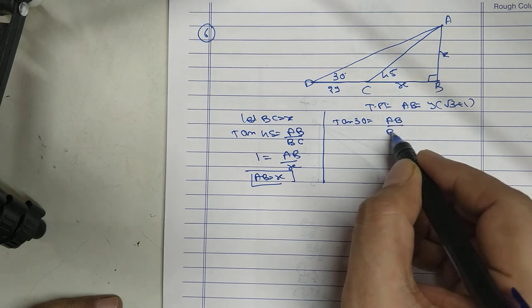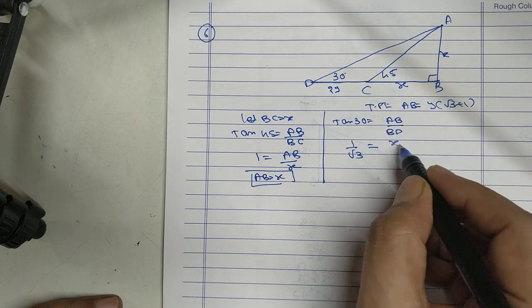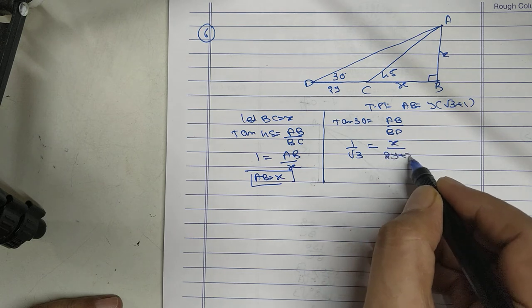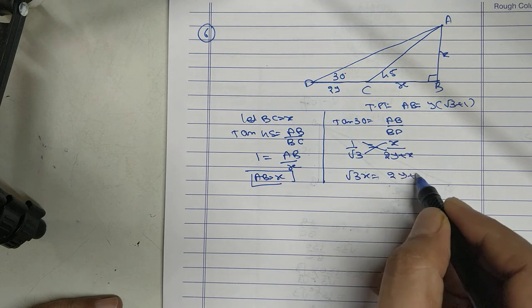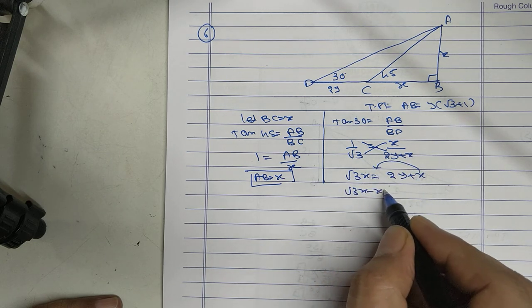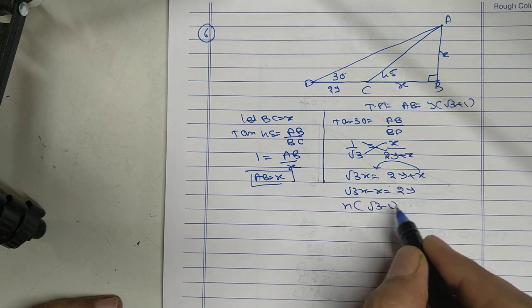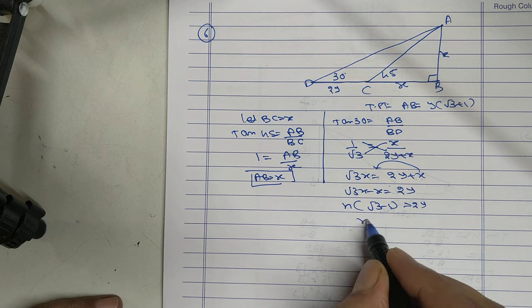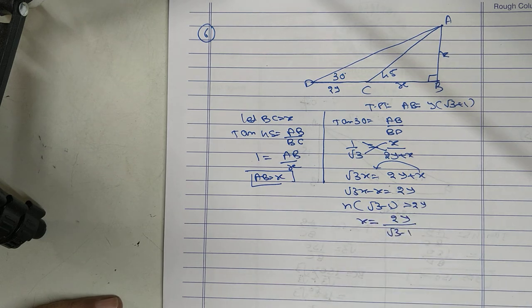AB upon BD, 1 upon root 3, X upon 2i plus X. Cross multiply: root 3X equals 2i plus X. Root 3X minus X equals 2i. X common. X equals 2i upon root 3 minus 1.